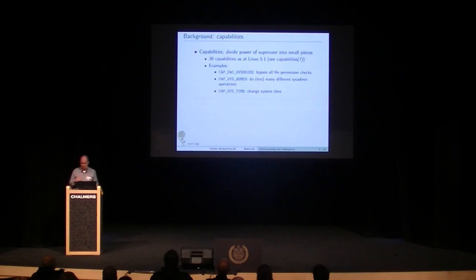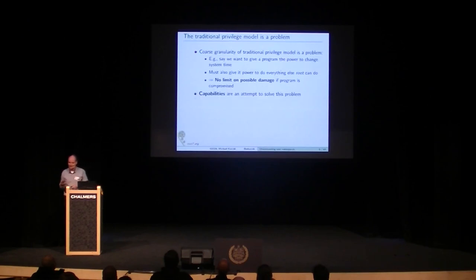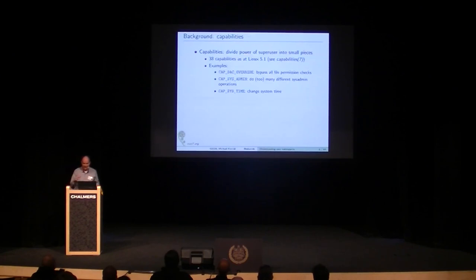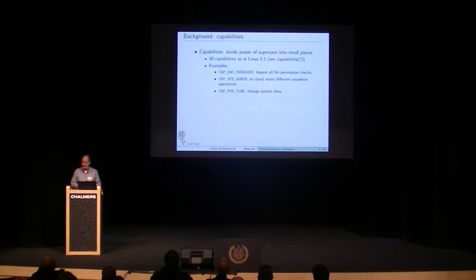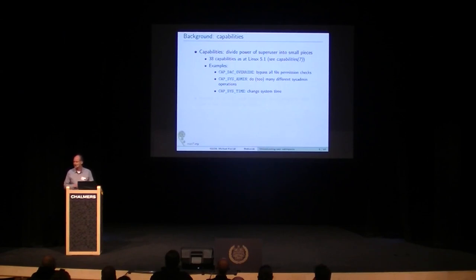This is why capabilities were invented. The idea is to have something in between — let's break the power of superuser into small pieces. As things stand in current kernels, there are 38 of these small pieces. The list has slowly grown over the years, but there hasn't been a new capability added for about five years now. So at the moment we have 38 capabilities.